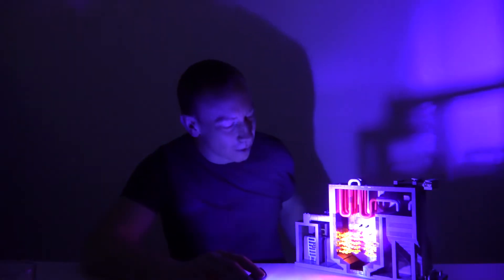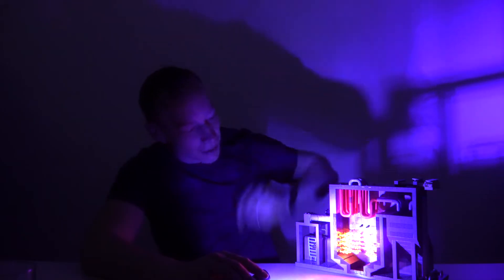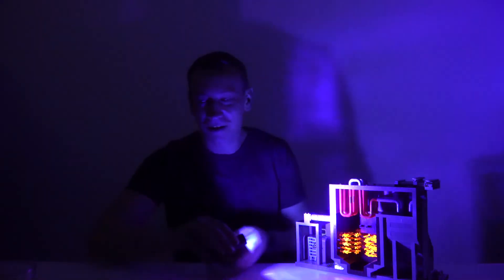So this is an ultraviolet torch and what it does is it causes certain objects to glow or fluoresce. So I've got my Lego power station here and it makes the flames glow really nicely.